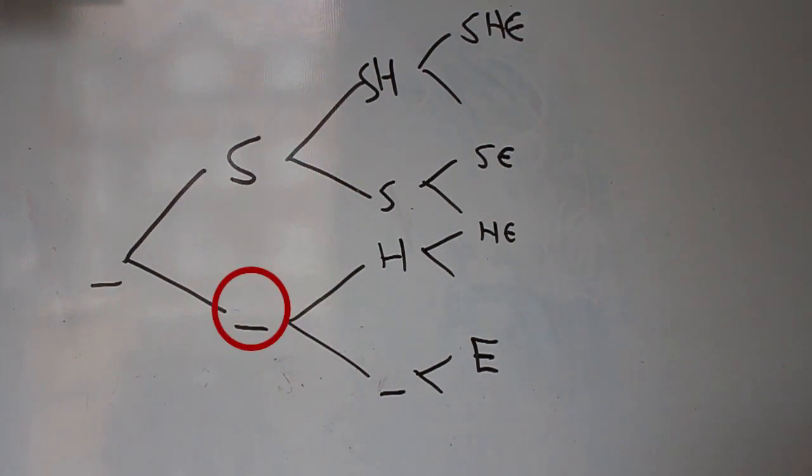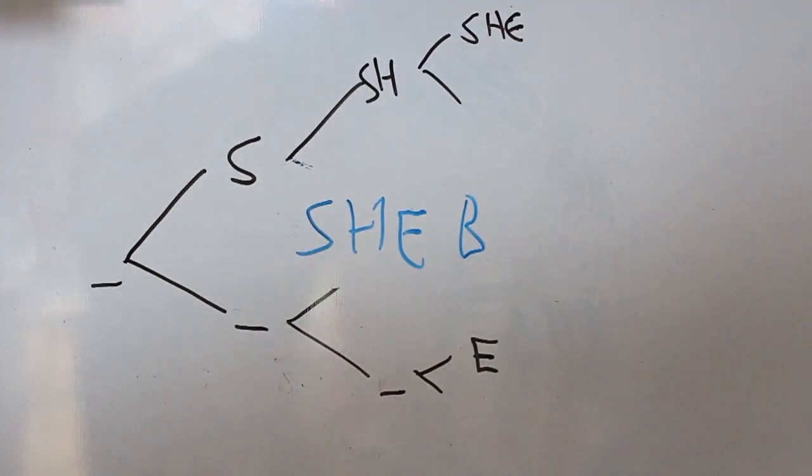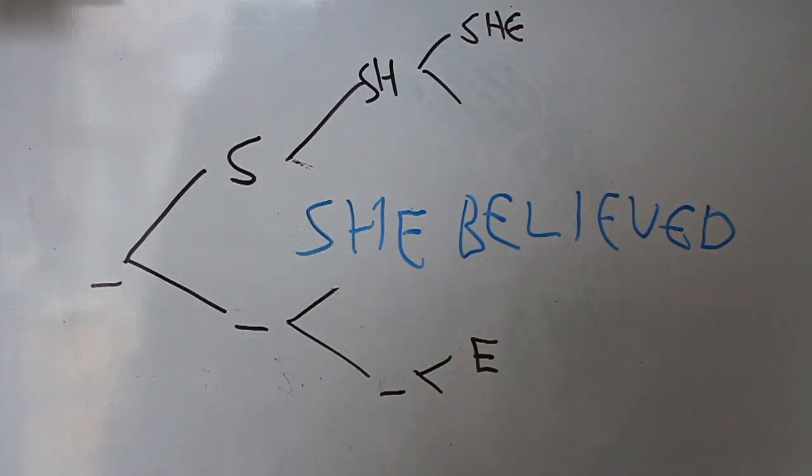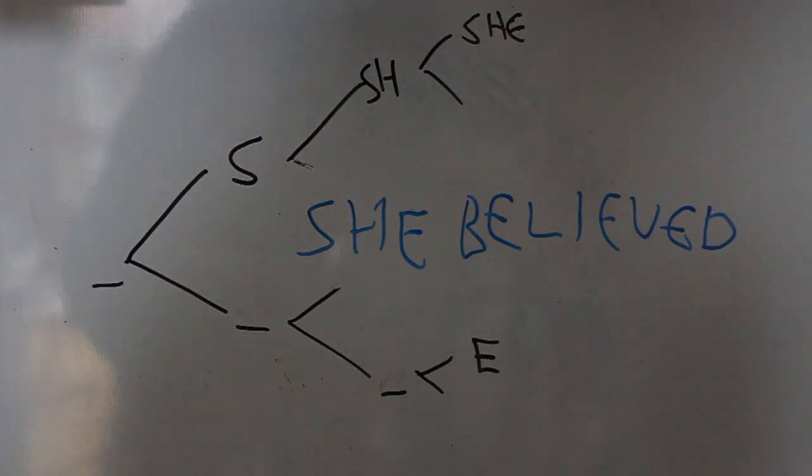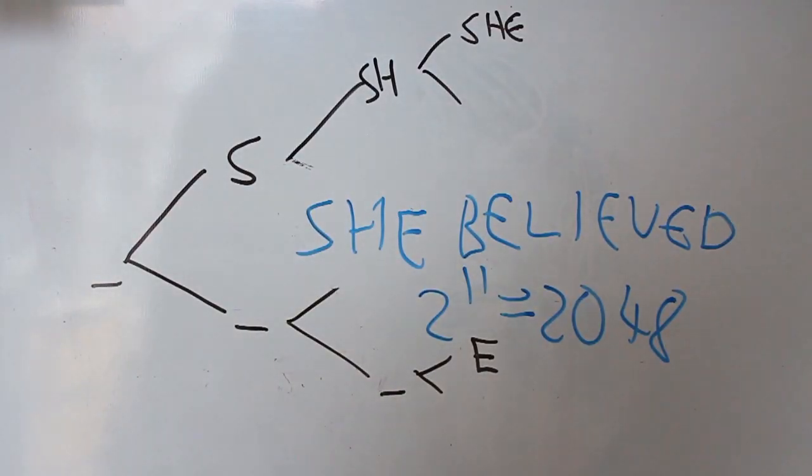we can include s or we can exclude s. Then we can include h or we can exclude h, giving us two possibilities for every possibility that came before, doubling the amount. Same goes for e and this continues on and on. One, two, three, four, five, six, seven, eight, nine, ten, eleven letters. Each one doubling the number of possibilities. So that gives us two to the power of eleven or two thousand forty-eight.